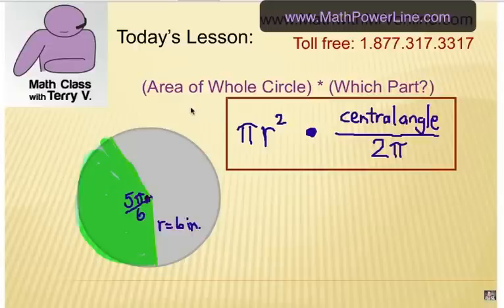Well, it's fairly simple. Basically, you take the idea of the area of the entire circle, multiply it by which part of the circle you're talking about. Now, the area of any circle, of course, is pi r squared, right? So, we're going to take pi r squared times the central angle, which in this case, for this video, is expressed in radians. And we're going to divide it by the entire rotation around a circle, which in radians is 2 pi.